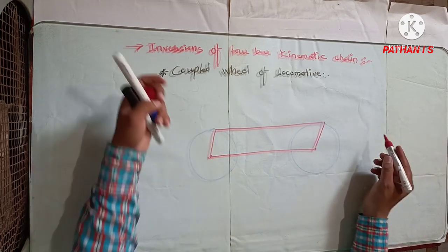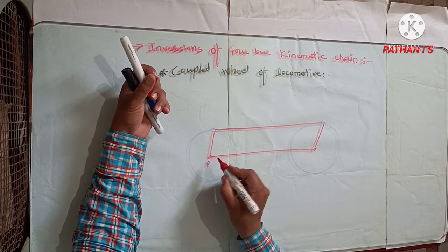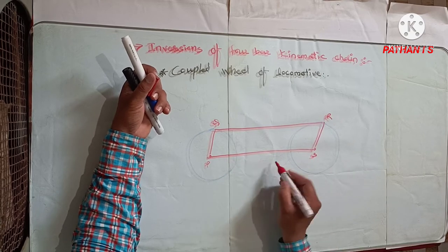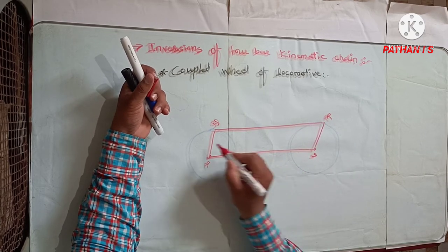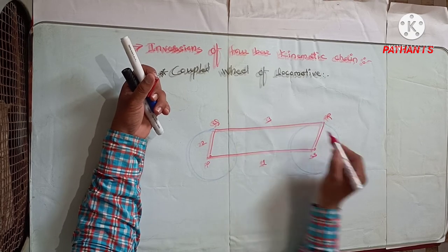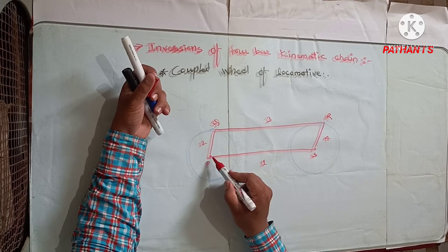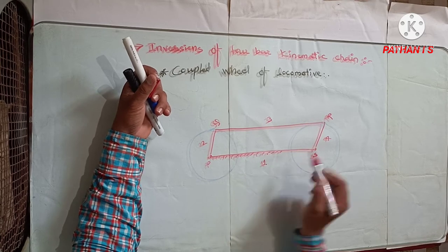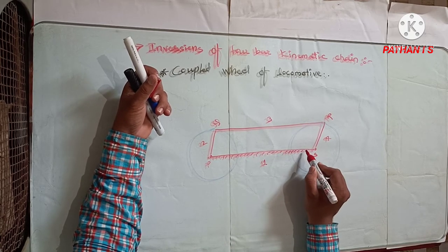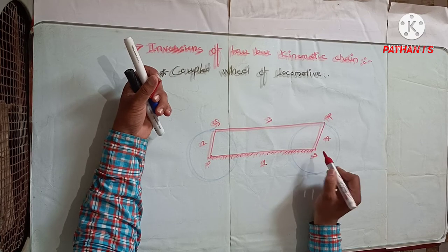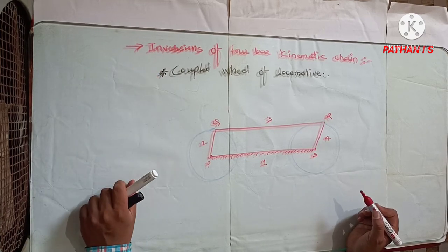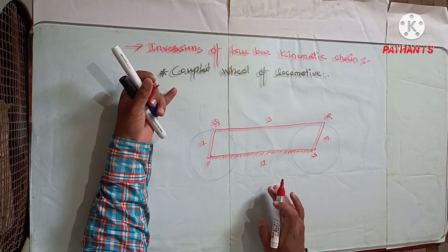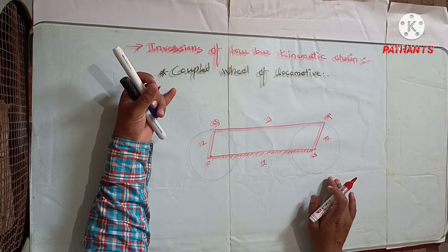This is a 4-bar chain PQRS. This is link 1, link 2, link 3, and link 4. Suppose this link is fixed. As we already know, when one of the links is fixed in the kinematic chain, then it is called a mechanism. So this is the coupled wheel of locomotive mechanism.